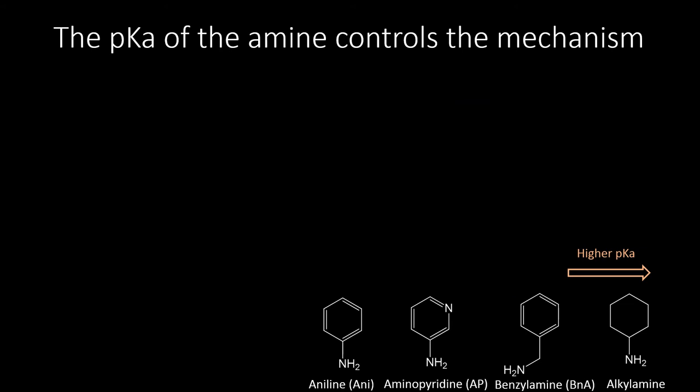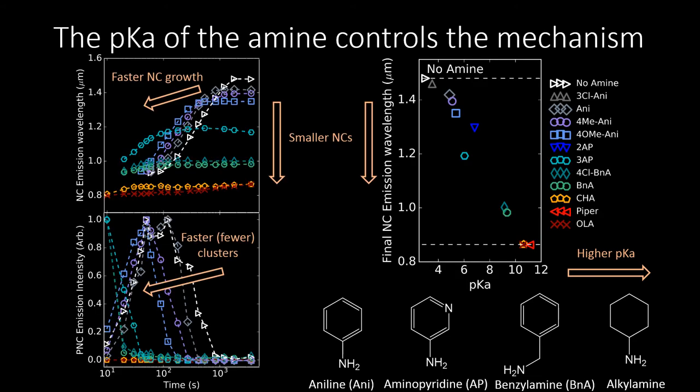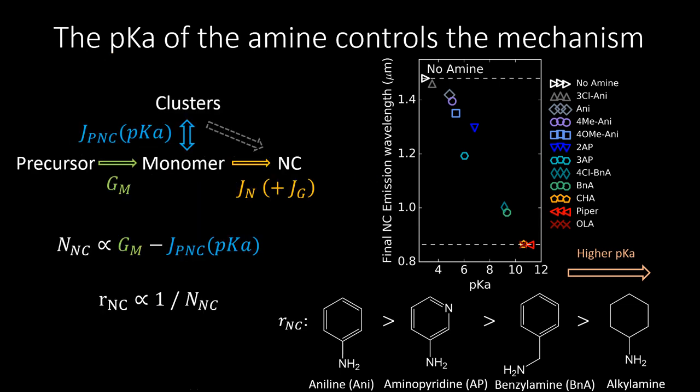To gain more insight, we added amines with different pKa's. Going from low pKa amines such as aniline to progressively stronger bases such as aminopyridines, benzylamines, and alkylamines, the final nanocrystal size can efficiently be tuned. When a low pKa amine is used, the pre-nucleation cluster concentration is long-lived, resulting in the slow nucleation and growth of large nanocrystals. As the pKa is raised, the pre-nucleation cluster kinetics are shortened and the nanocrystal size reduced, until the highest pKa amines are used, such as cyclohexylamine, and no more pre-nucleation clusters are observable, yielding ultra-small PbS nanocrystals at completion.